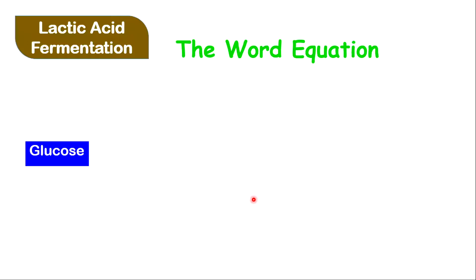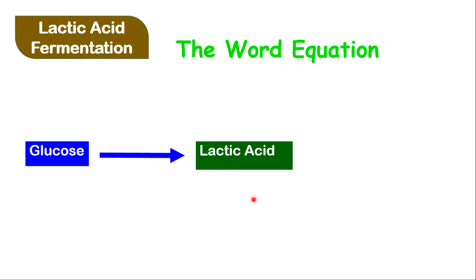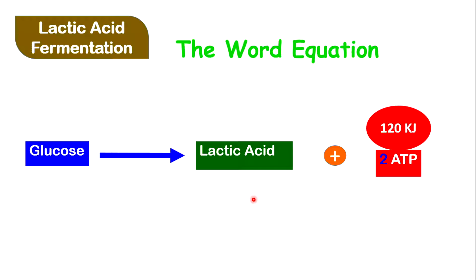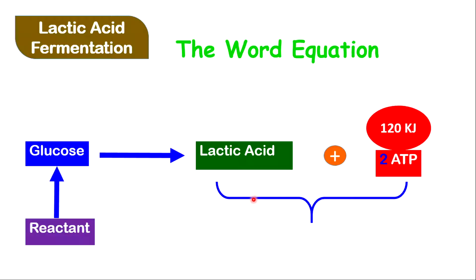What is required for lactic acid fermentation, again, is glucose — that is common to all respiration. The glucose will break down into lactic acid, and you also get energy. There are only two things produced: lactic acid and energy. It turns out that one glucose molecule produces two ATP molecules, which is equivalent to approximately 120 kilojoules of energy. The waste product from lactic acid fermentation is lactic acid.